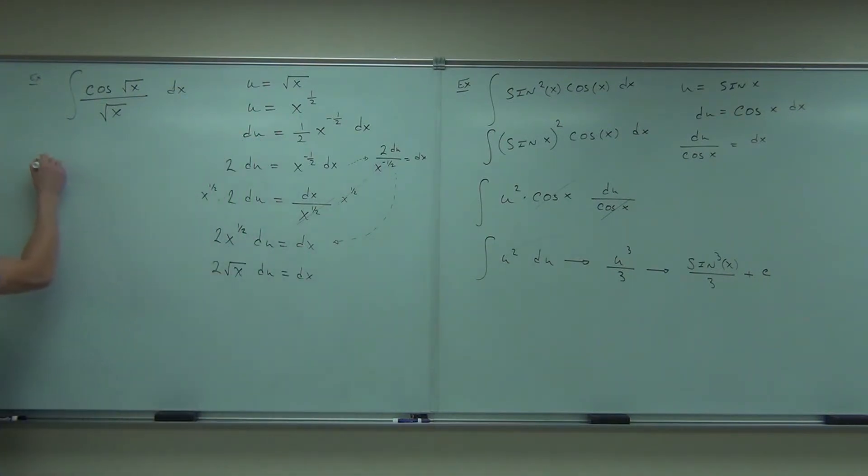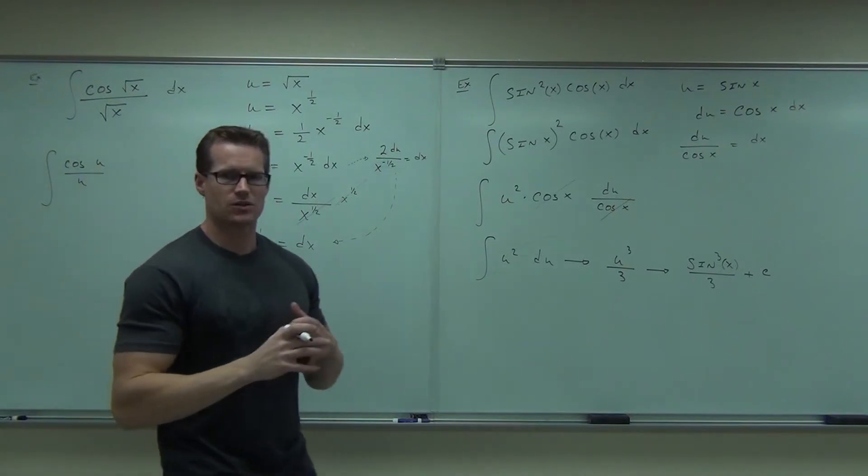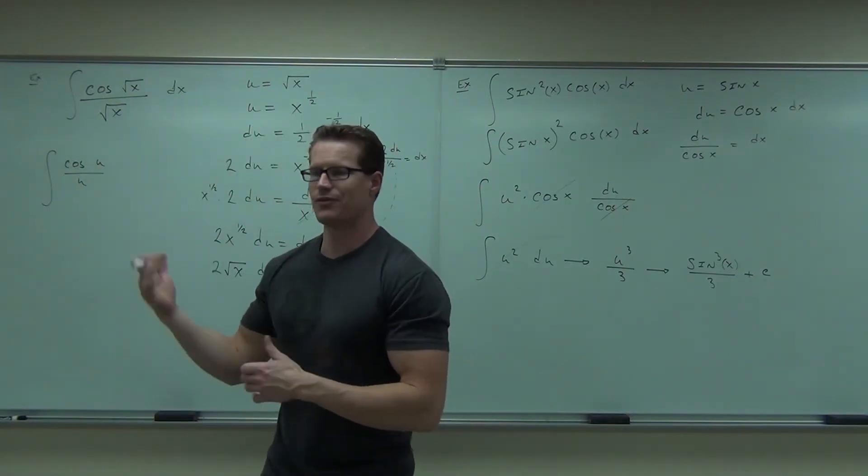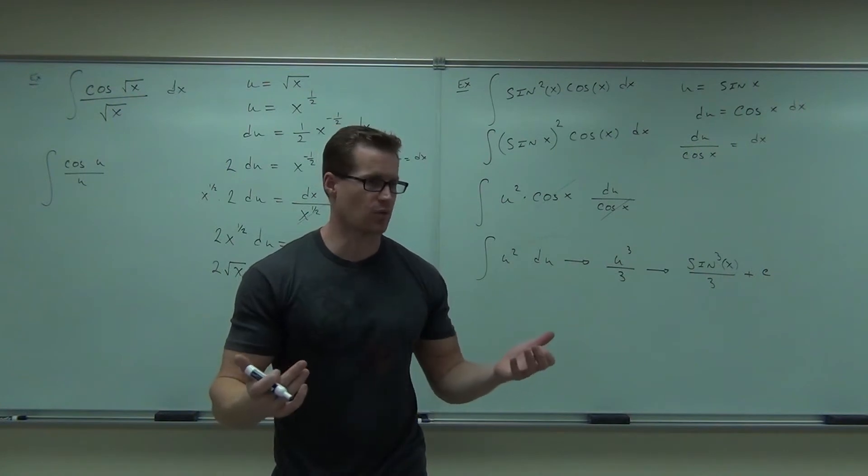Look what would happen. If I do cosine u over u, I can't just make this a du. Even if I did, it wouldn't work because we don't have cosine u over u. That doesn't work.